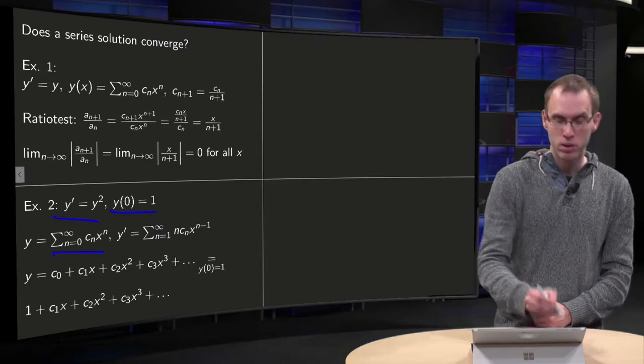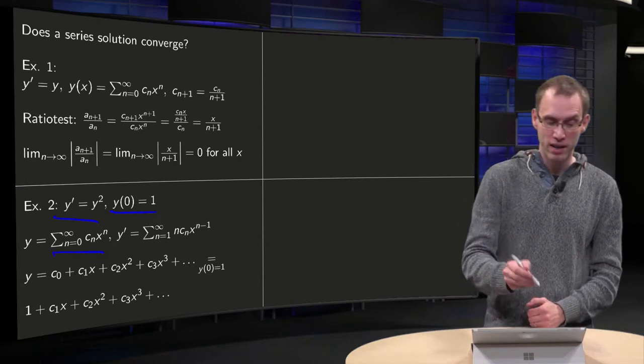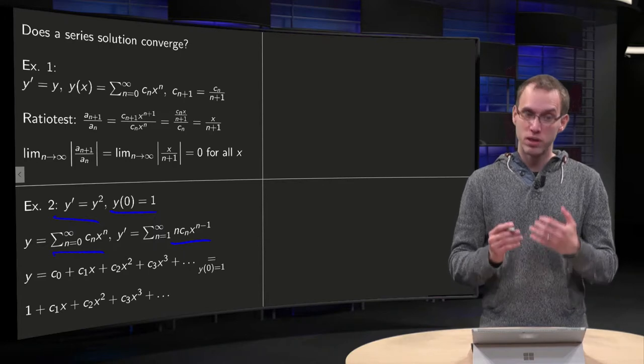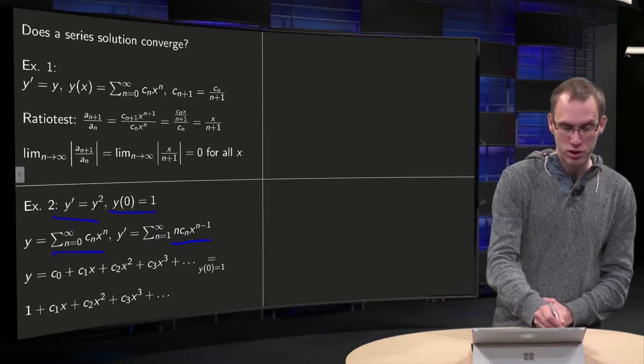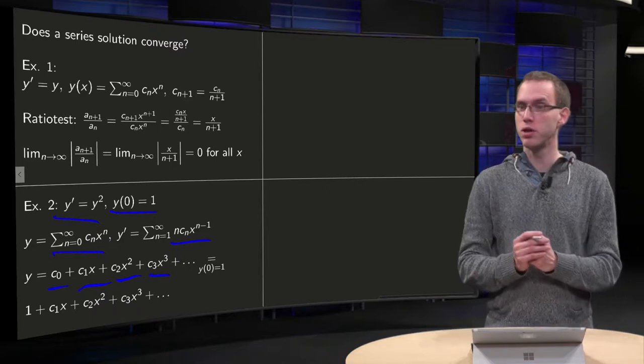So we set y to sum n from 0 to infinity, cn times x to the power n, compute y prime, write down what y is, so c0 plus c1 times x plus c2 times x squared plus c3 times x cubed.